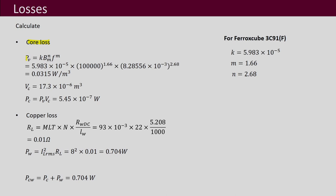For core loss, we use the standard equation, finding the K, M, and N values for the chosen ferrite core, then substituting to obtain the core loss density. Multiplying by the volume of the core — calculated from the core dimensions — we obtain the total core losses, and we see that the core loss is very, very small.